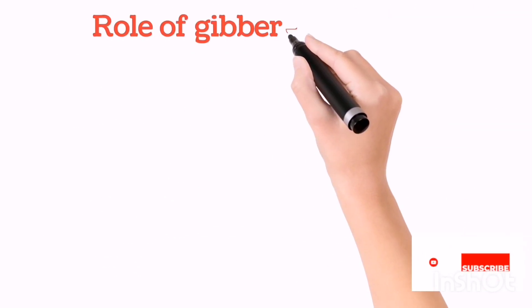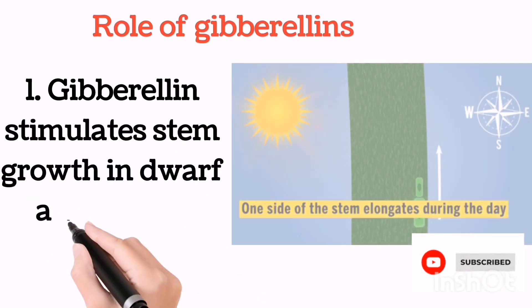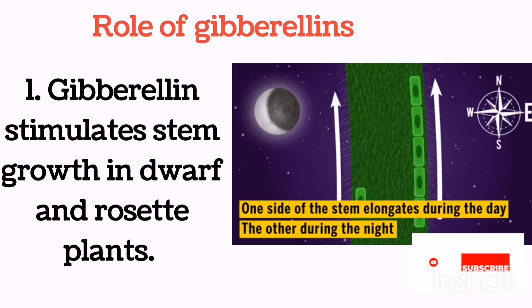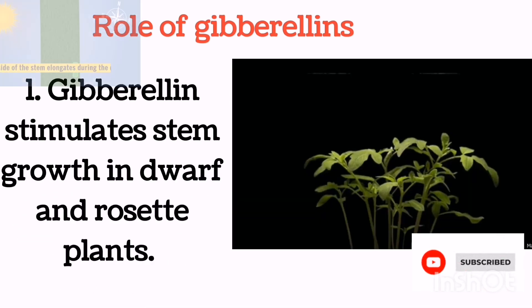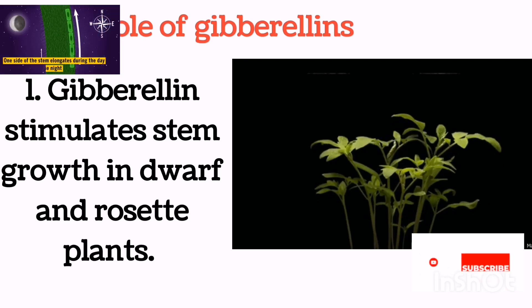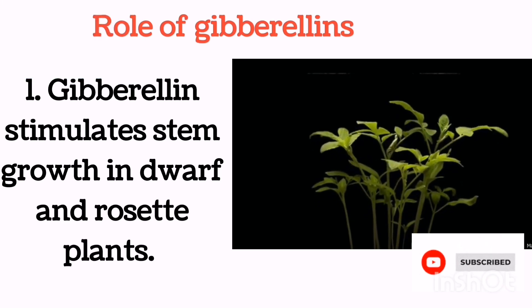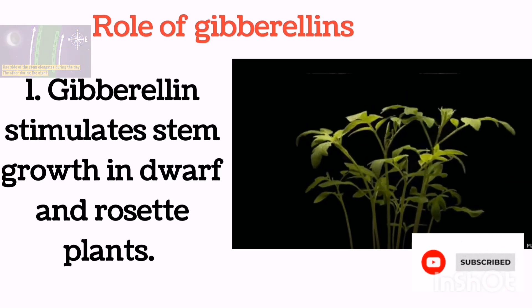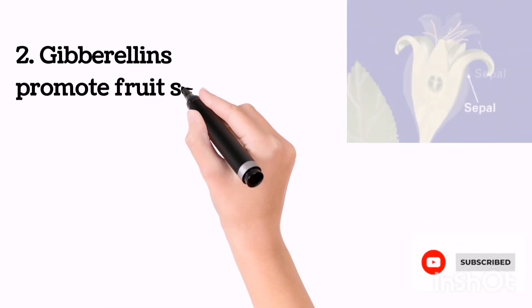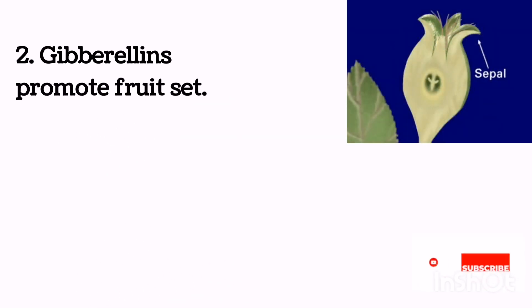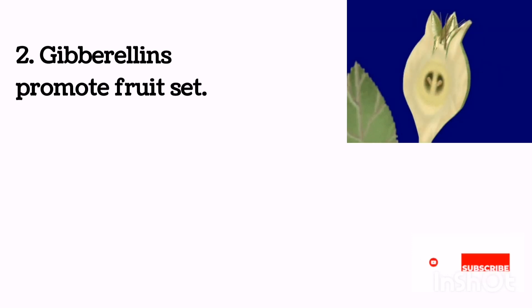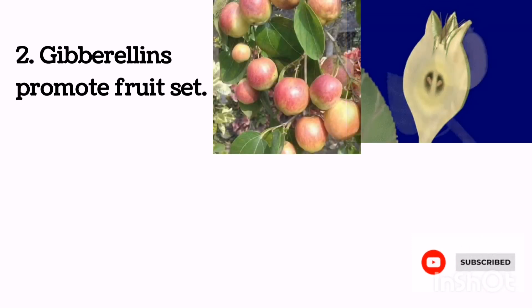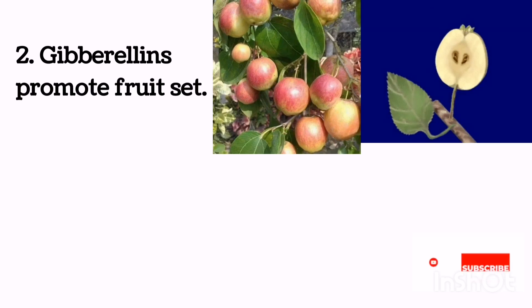Gibberellin stimulates stem growth in dwarf and rosette plants. Applied gibberellin promotes internodal elongation, and dramatic elongations are seen in dwarf and rosette species as well as members of the grass family. Gibberellins also promote fruit set — meaning initiation of fruit growth following pollination. Stimulation of fruit set by gibberellin has been observed in apple, Malus silvestris.